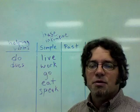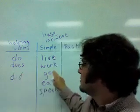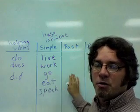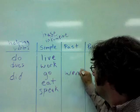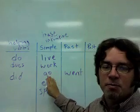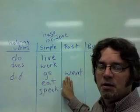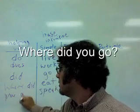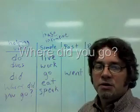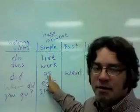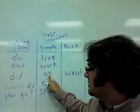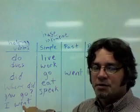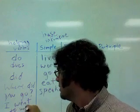To make the past tense, you can use 'did' and the simple form of the verb. Where did you go? Notice the difference between the simple form of the verb and the past tense form of the verb. Where did you go? To make this question, I'm using the helping verb and the simple form of the verb. The answer, I went — this is the main verb in the past tense — I went to work.